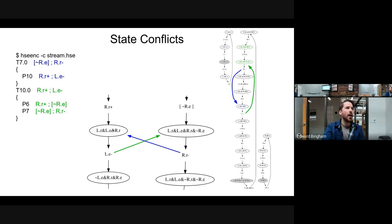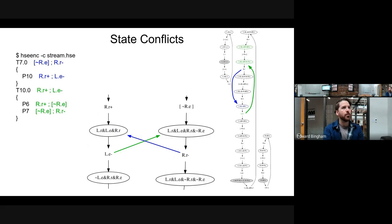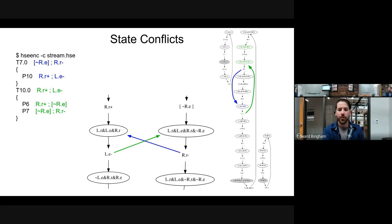R.E could be low or high in the state before L.E down. Because of this conflict, both transitions are able to fire in the state preceding the other, and we don't want this because it would violate our handshake expansion. So we need to fix this by inserting new transitions into this HSE.